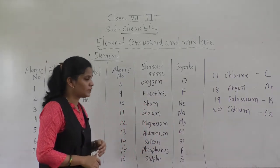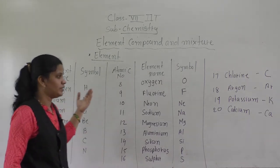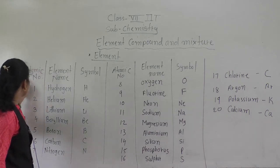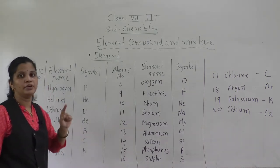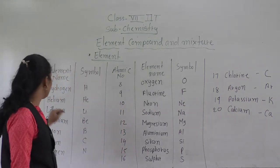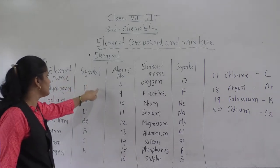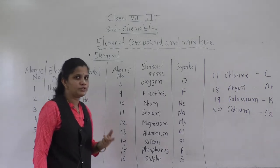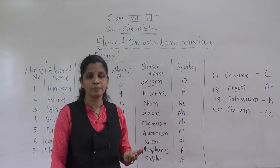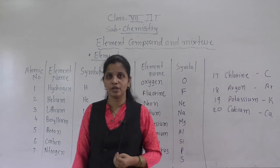Now see here, I have written here for 1 to 20 elements. This is the atomic number. In the periodic table also, the atomic number is given. Atomic number 1, element name and symbol. In chemistry, we will learn in the next chapter or next year, the chemical reactions.